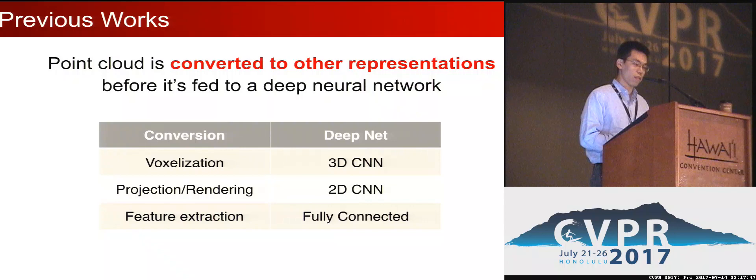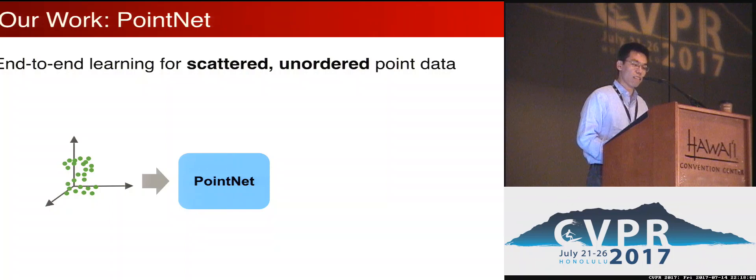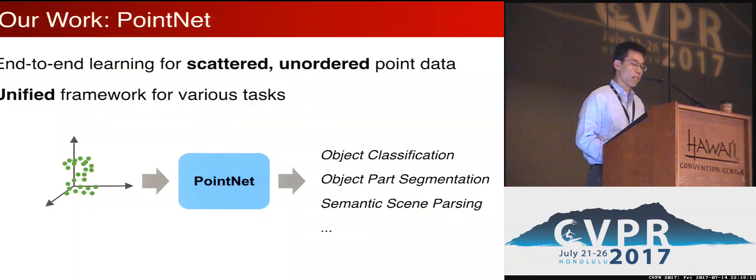There have been a few works that process point cloud with deep neural networks. However, nearly all of them convert point cloud to other representations and then use existing neural network architectures. So a research question is: can we achieve effective feature learning directly on point cloud? The answer is yes. In our work, PointNet, we do end-to-end learning for scattered and unordered point data.